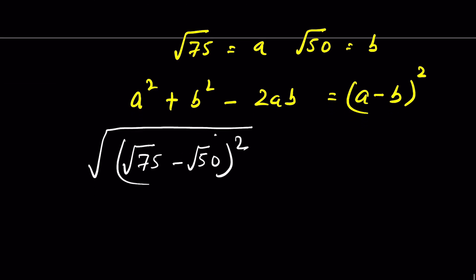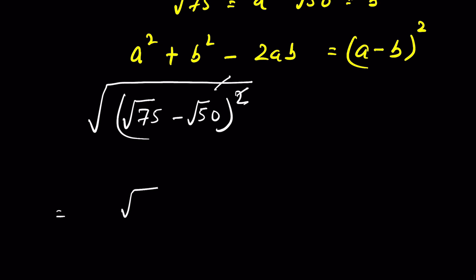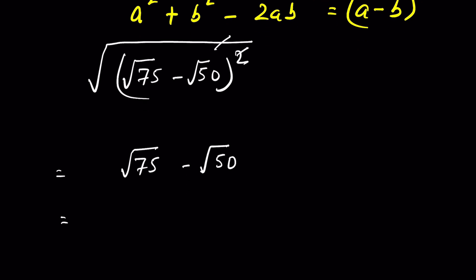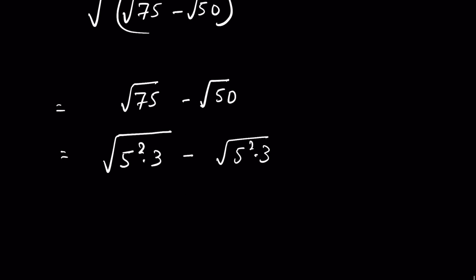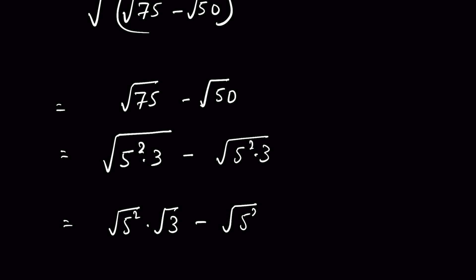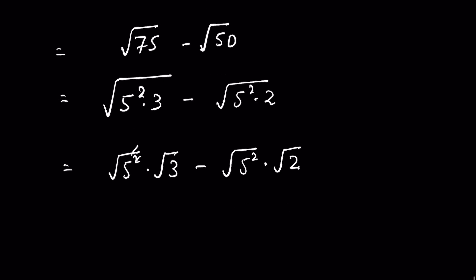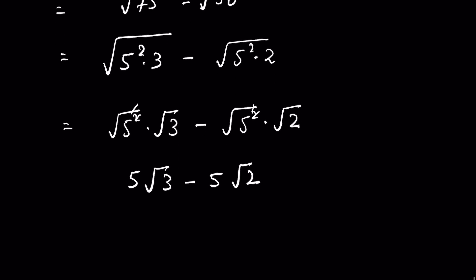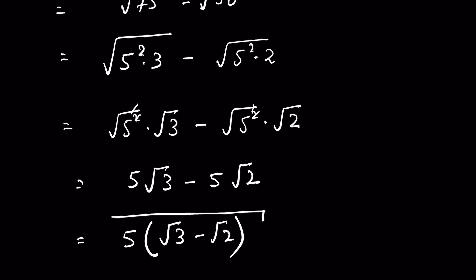Now we can remove the outer square root with the square, giving us square root of 75 minus square root of 50. We can further simplify these radicals: 75 equals 5 squared times 3, and 50 equals 5 squared times 2. So it is 5 times square root of 3 minus 5 times square root of 2. Taking 5 as common, we get 5 times (square root of 3 minus square root of 2). This is our final answer.